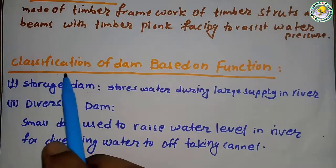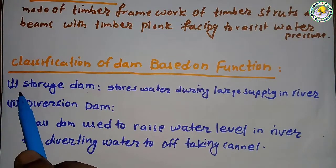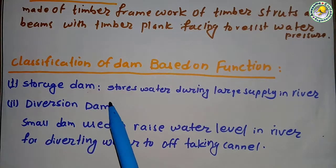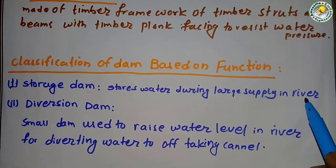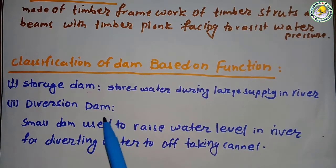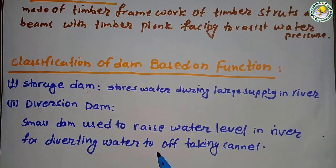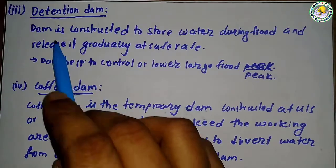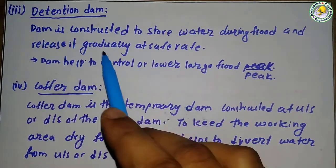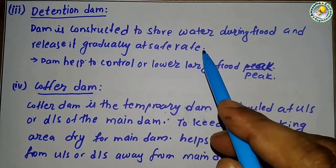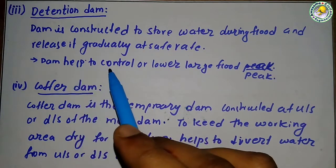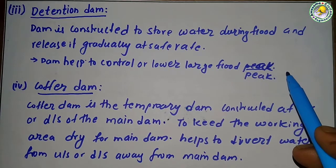Classification based on function: a storage dam stores water during periods of large supply in the river. A diversion dam is a small dam used to raise the water level for diverting water to an off-taking canal. A detention dam stores water during floods and releases it gradually at a safe rate to control large flood peaks.